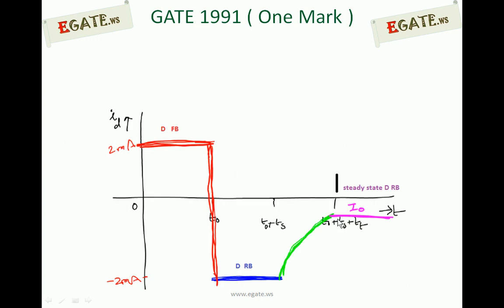So this is the final diagram when the input for the diode is switching from plus 20 volts to minus 20 volts at T equal to T0.